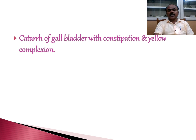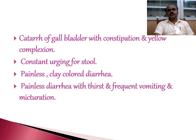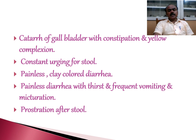There is catarrh of the bladder with constipation and yellow complexion, constant urging for stool, and painless clay-coloured stool — which is a characteristic feature of Berberis Vulgaris — along with painless diarrhoea with thirst, frequent vomiting, and there is severe prostration after stool.